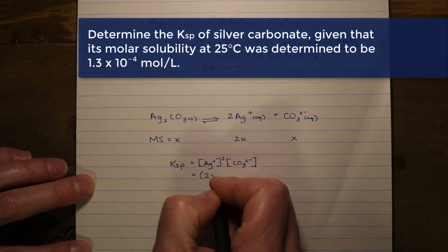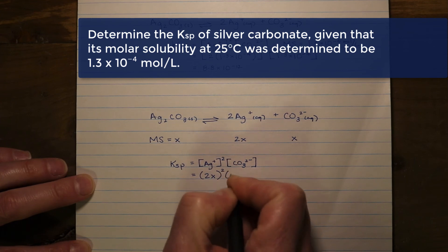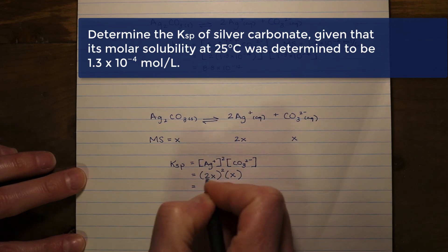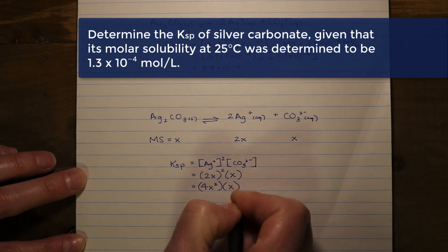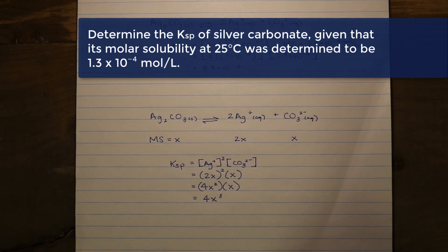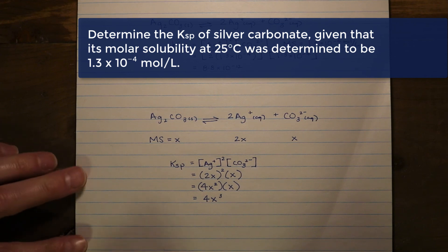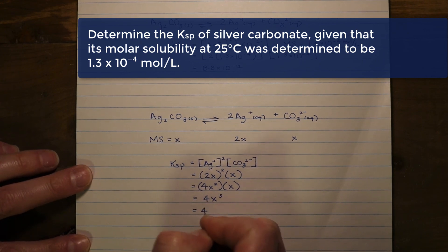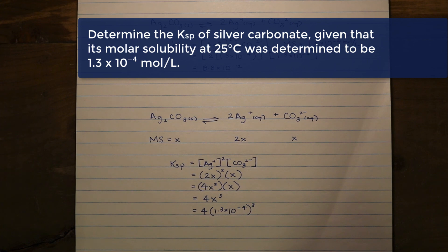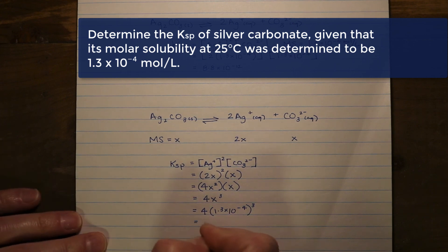Keeping in mind that we're going to represent X for our molar solubility, we can then solve and start to expand in this fashion. Remember when we square something outside the bracket, we have to square everything inside the brackets, so it's going to be 4X squared multiplied by X, resulting in a total value of 4X cubed. If we understand the value of molar solubility is 1.3 times 10 to the negative 4, then we can sub that in, so it's going to be 4 times 1.3 times 10 to the negative 4 all cubed. If we perform this calculation, we're going to find that we get the exact same answer, 8.8 times 10 to the negative 12.